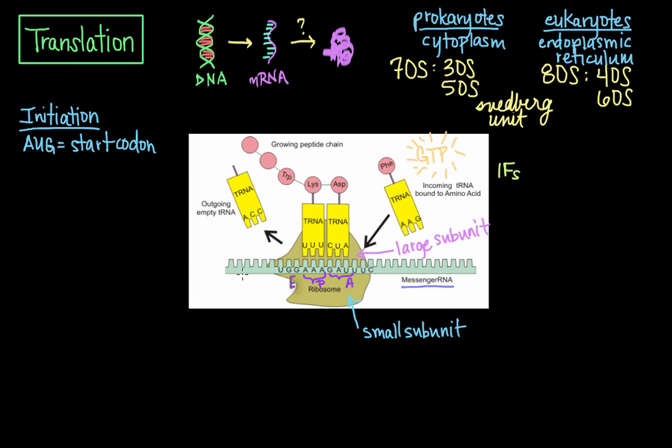In prokaryotes specifically, the 30S subunit binds to the mRNA template at this purine-rich region known as the Shine-Delgarno sequence, which is upstream from the AUG initiation codon. This end of the messenger RNA would be considered upstream, and this end is considered downstream. The Shine-Delgarno sequence is complementary to a pyrimidine-rich region on the 16S ribosomal RNA component of the 30S subunit in prokaryotes. During the formation of the initiation complex, these complementary nucleotide sequences pair up to form a double-stranded RNA structure that binds the mRNA to the ribosome in such a way that the initiation codon, the AUG codon, is placed at the P site.